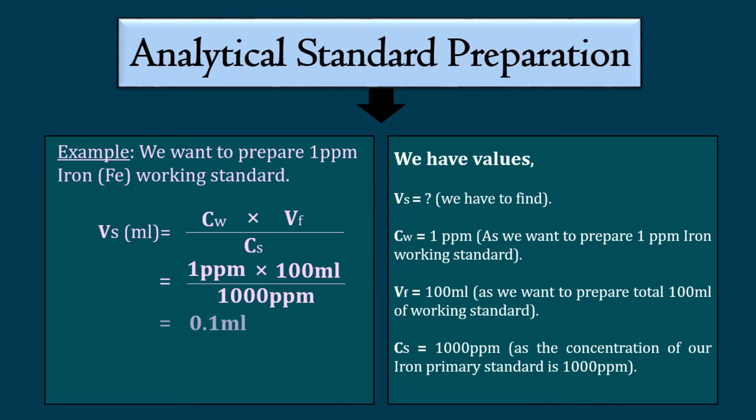Now we will put these values in the formula to find the Vs. After calculating, we found that Vs is 0.1 ml. So we have to deliver 0.1 ml or 100 microliters of iron primary standard to prepare 100 ml of 1 ppm iron working standard.